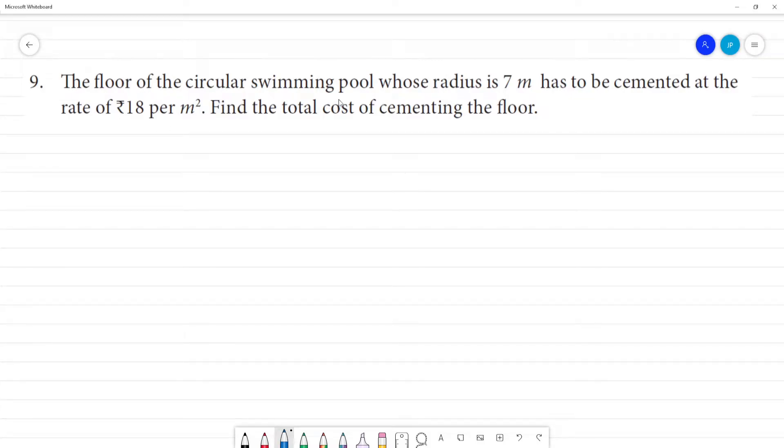The floor of a circular swimming pool whose radius is 7 meter. So swimming pool, circular swimming pool, the floor radius is 7 meter. Radius is equal to 7 meter.